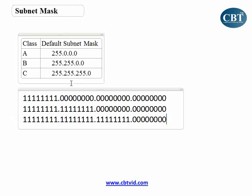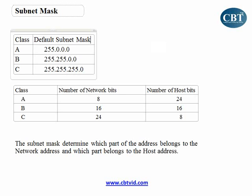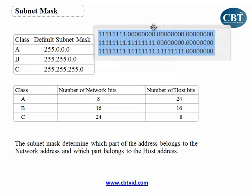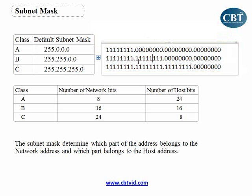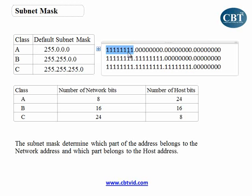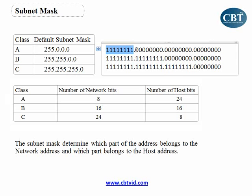So how does this define my network part and my host part of the IP address? Look at this table. In Class A, the number of network bits is 8 — and look here, the number of ones in the subnet mask is 8. The number of host bits in Class A is 24, and in the default subnet mask of Class A, the number of host bits is also 24.